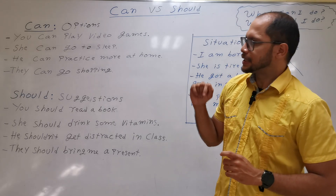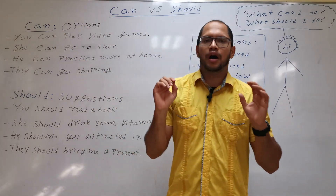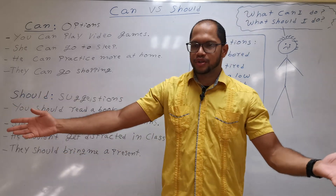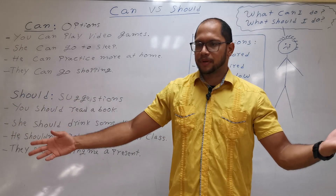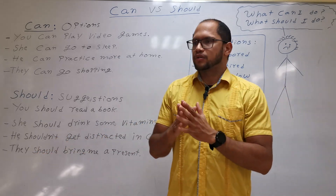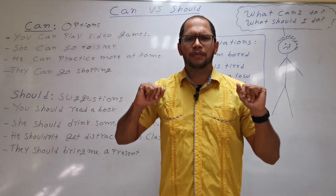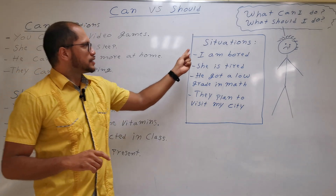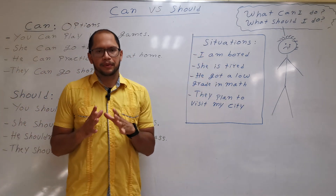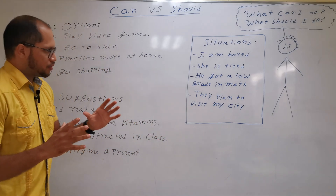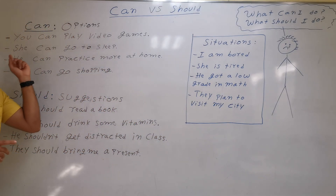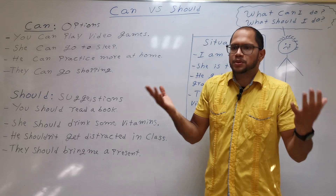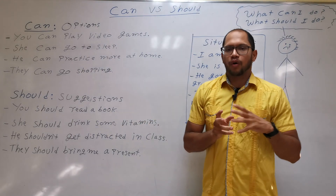The first thing is that CAN is for options — alternatives. Option A, option B. You can go to the park, you can go to the disco. Here we have an example: 'I am bored.' That is the situation. So I will tell you: well, you can play video games — that is an option.